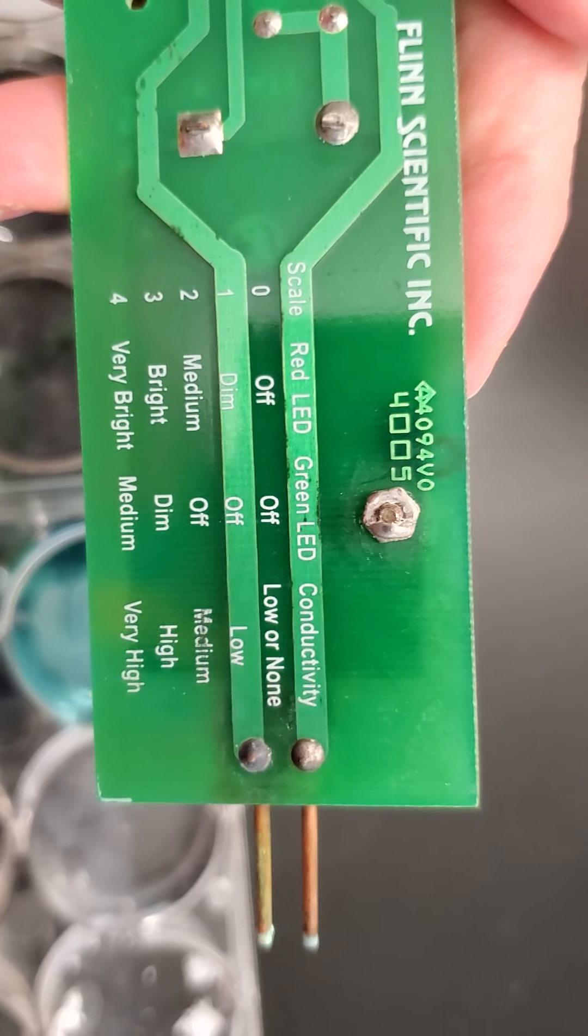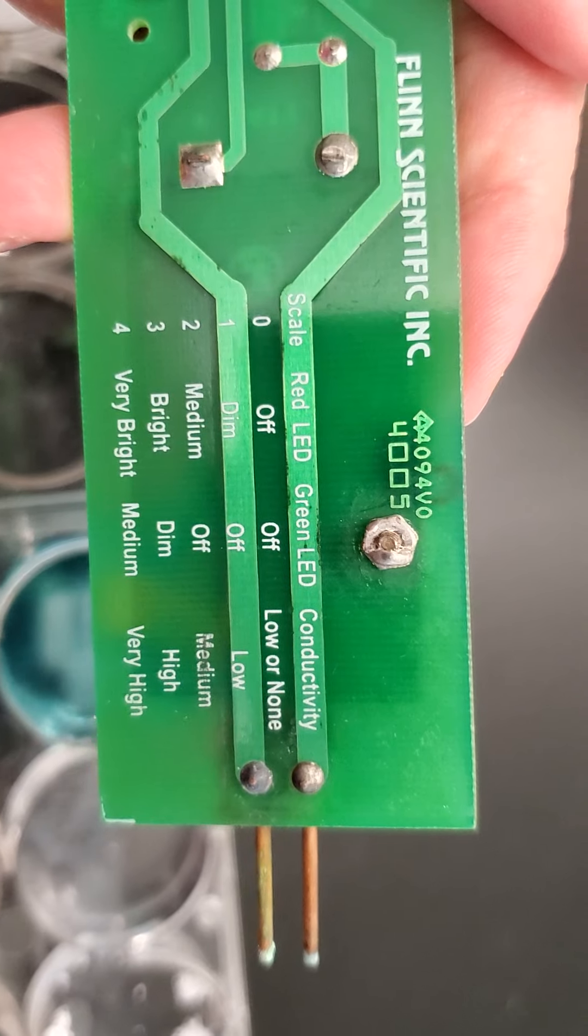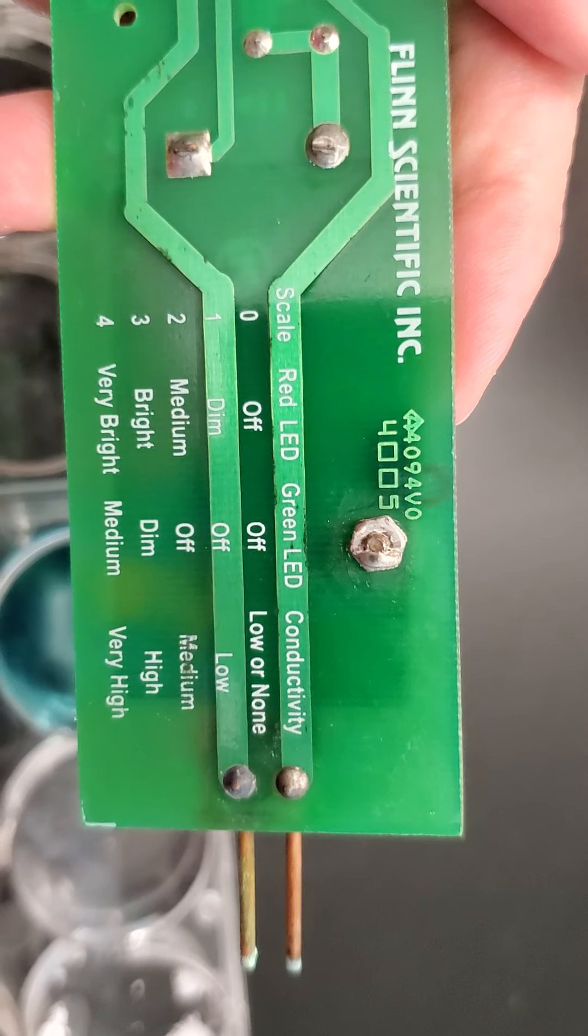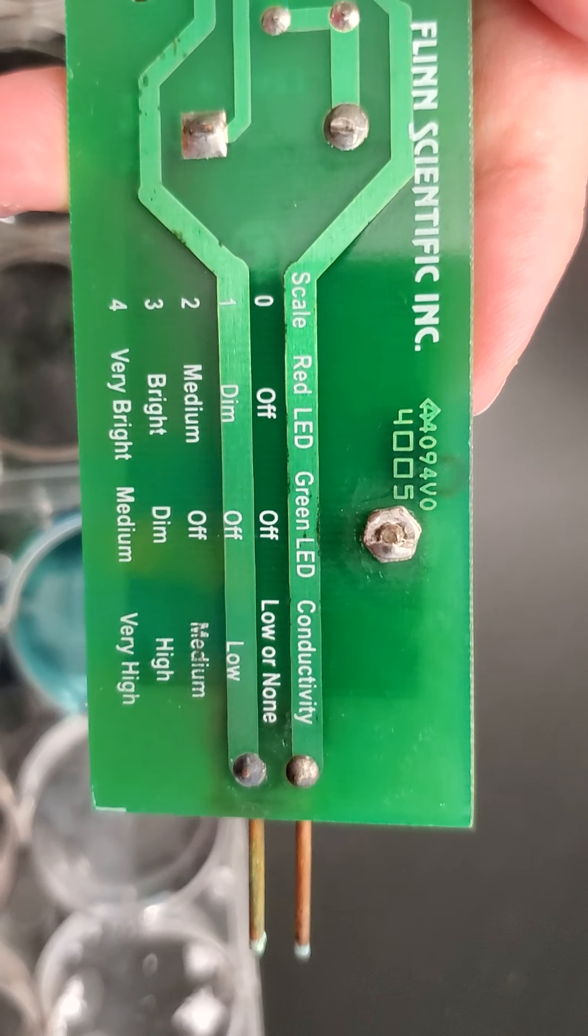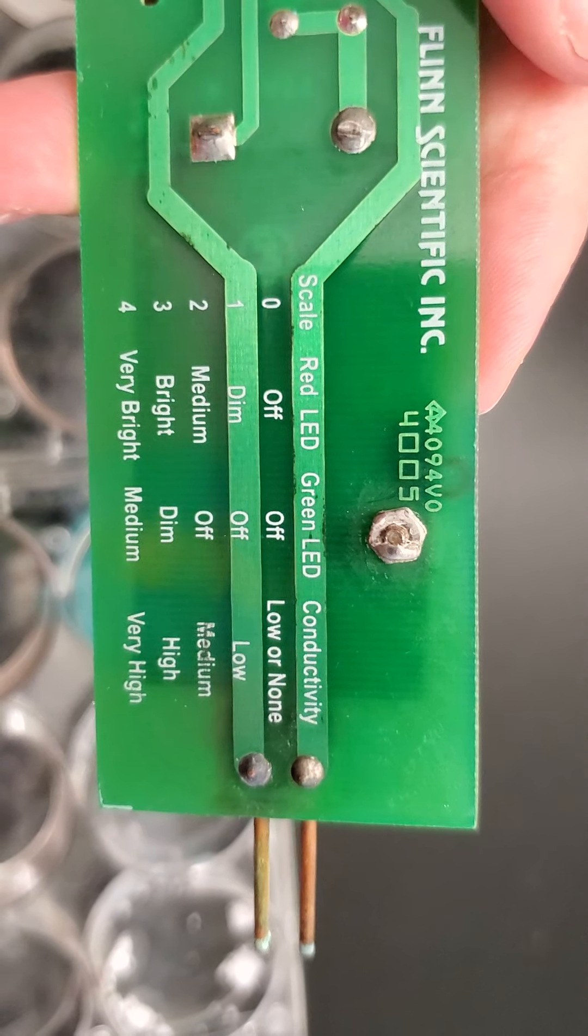If the red is bright and the green is on dim, then it's high. If the red is extremely bright and the green is medium, then it's very high conductivity. Keep in mind those—I'd write those down if I were you.